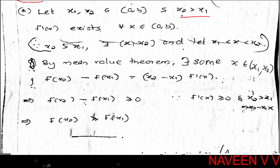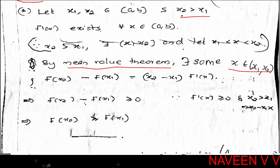By the Mean Value Theorem, applied to f on the closed interval [x1, x2], there exists some x in open interval (x1, x2) such that f(x2) - f(x1) = (x2 - x1) · f'(x).